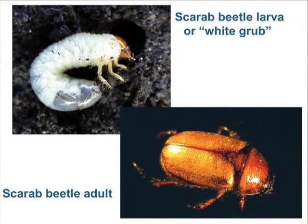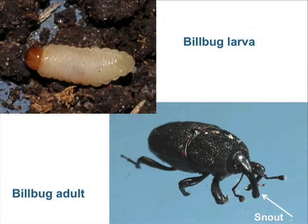Here's another insect that can be referred to correctly as a grub, even though it's not a white grub. At first glance, the larvae of billbugs look a lot like white grub larvae, because they're also soft-bodied and white, frequently found in the soil, and are the damaging stage of the insect. Like the white grub, the adult billbug is also a beetle. The most important distinction is that billbug larvae have no legs — they're just a head and a body, and not much else.